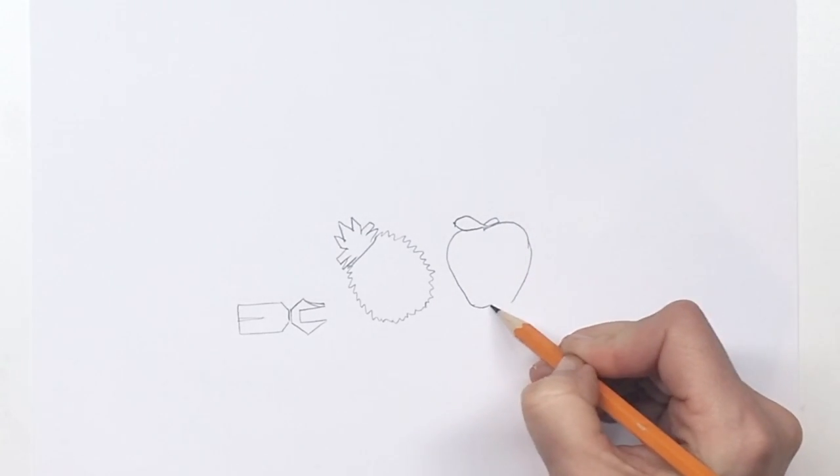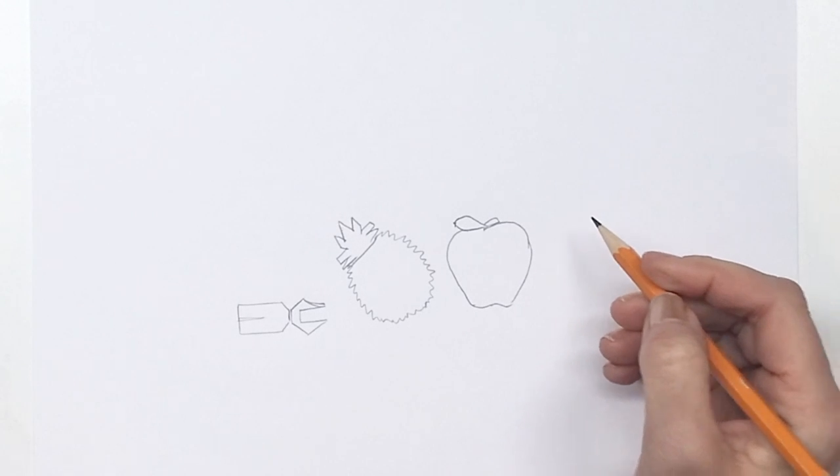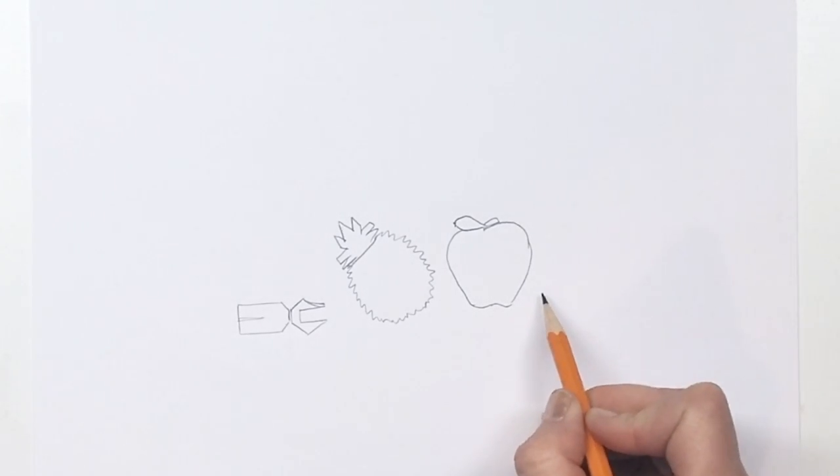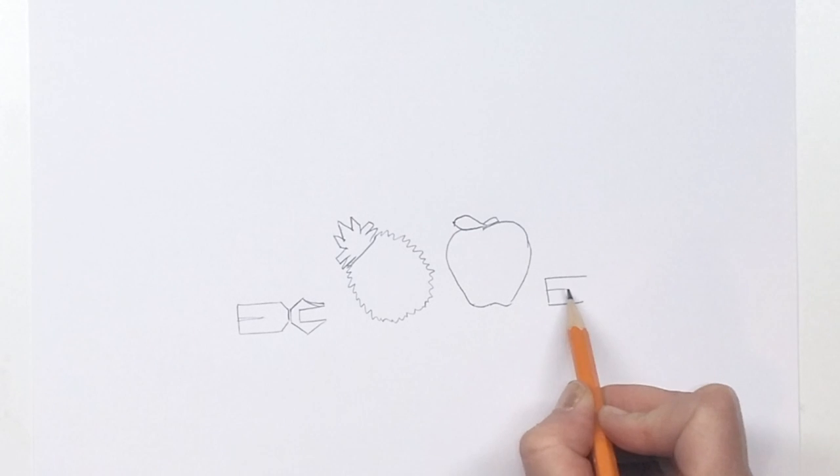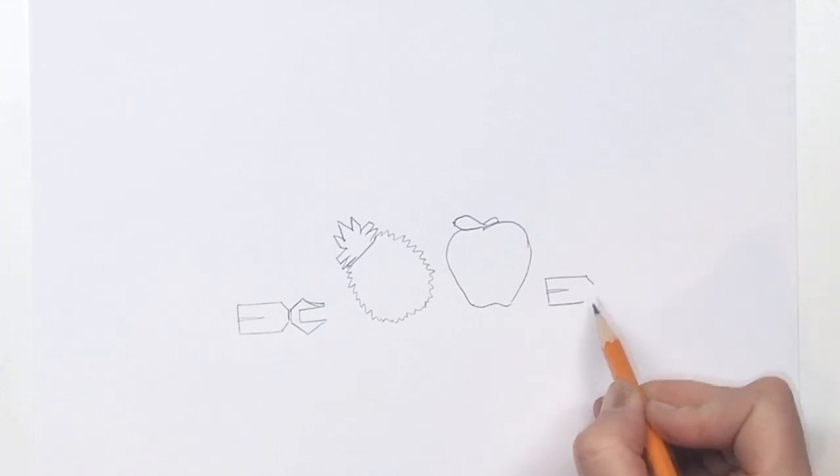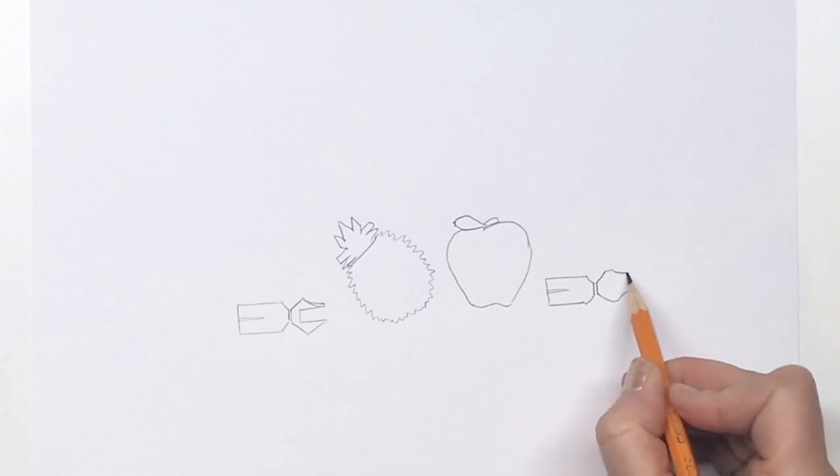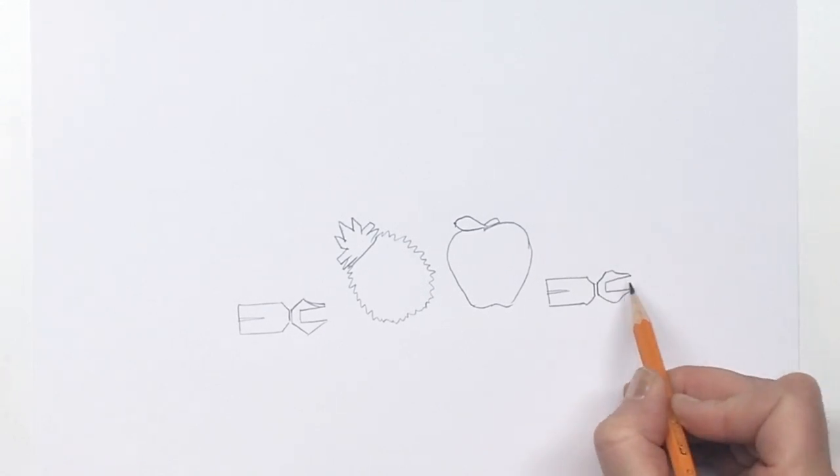And then we're going to bump the bottom up like this and then we're going to have one more pen. Same as before, start off with this rectangle shape and have a slit, angling in like so, close it off, come up and down and over and over and looping in like so.